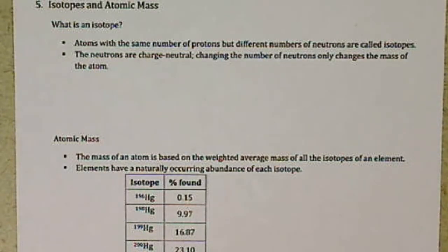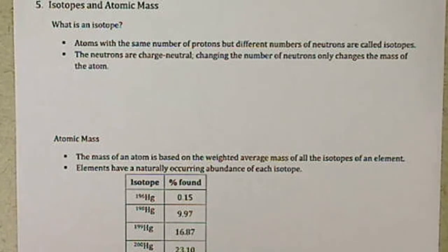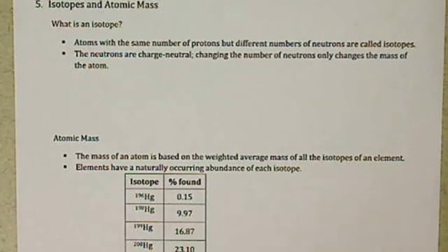If we recall back from one of the previous lectures, we had talked about Dalton's atomic theory, and one of his postulates was that each atom of the same element had the same mass, they were identical. We said that was false, and that's because we have what's called isotopes.